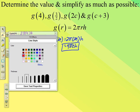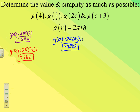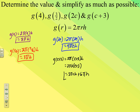For g(c+3): 2π(c+3)h. Rearranging as 2πh × (c+3), we distribute 2πh into the parentheses: 2πh × c + 2πh × 3 = 2πch + 6πh. That's the final expression for g(c+3).